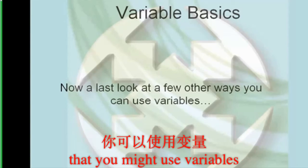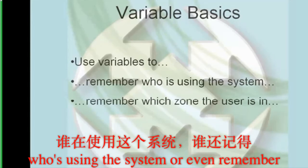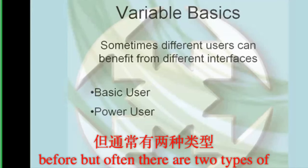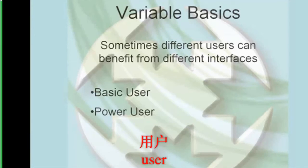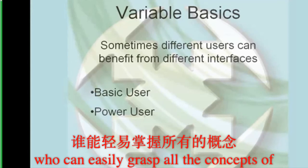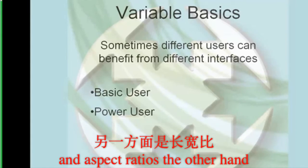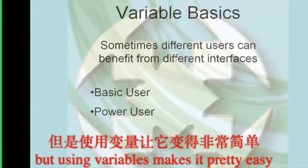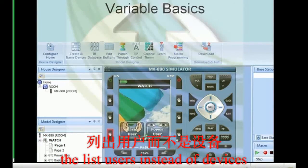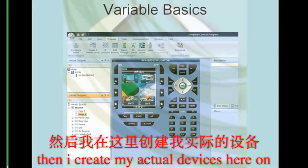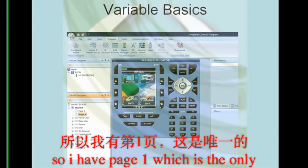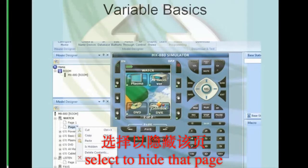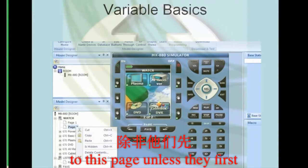Now that we've covered everything, let's take a look at a couple other ways that you might use variables. You might use variables to remember who's using the system or even what zone they're in. We're going to start with remembering who the user is. Often there are two types of users in the family: a power user and a basic user. Power users are the propeller-head types who can easily grasp all the concepts of how to use the system — they like to play with surround modes and aspect ratios. Basic users really just want to push a button and have stuff work. Trying to create a user interface for two types of users can be challenging, but using variables makes it pretty easy. You'd create a main start page that lists users instead of devices, then create the actual devices on page two, which we hide from the customer by right-clicking in the tree view area and selecting to hide that page. This way the customer can't get to that page unless they first choose what type of user they are.